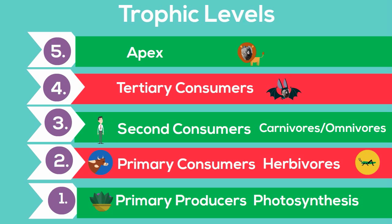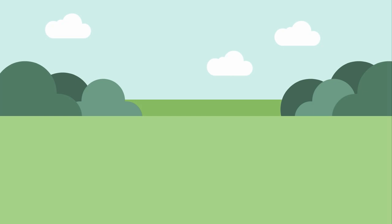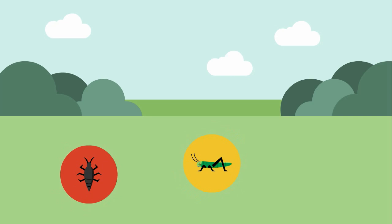Let's take a look at a simple food chain. Level 1 includes plants, and they get their energy from the sun. Insects eat the grass, so they are primary consumers, also called herbivores. This is Level 2.